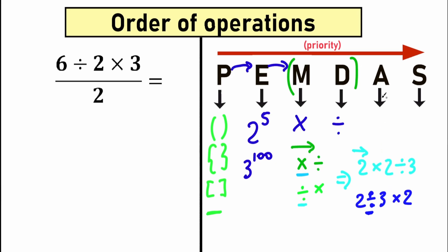The last step is addition and subtraction — this is the most basic one. A stands for addition and S stands for subtraction. We can easily handle parentheses, exponents, multiplication, division first, and then addition and subtraction is very basic and easy.